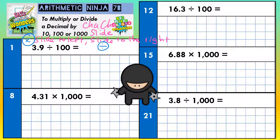What we're trying to do here is give us a way of remembering which way to move our digits: times to the left, divide to the right. Any time we're dealing with a divide by 10, 100, or 1,000, we're moving the digits to the right to make the answer smaller than what we started with. And if we are multiplying, we move the digits to the left — times to the left — to make the answer bigger than what we started with.